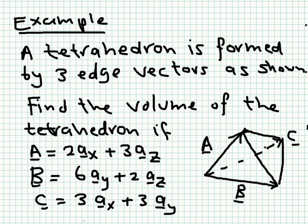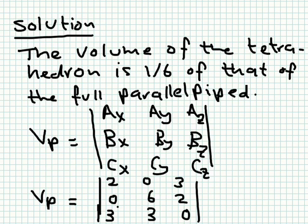This 3D shape has four faces. We would like to know the volume of this tetrahedron, where A equals 2Ax plus 3Az, B equals 6Az plus 2Az, and C equals 3Ax plus 3Az. The tetrahedron has a volume of one-sixth of that of the corresponding parallelepiped in which each one of these vectors is an edge.